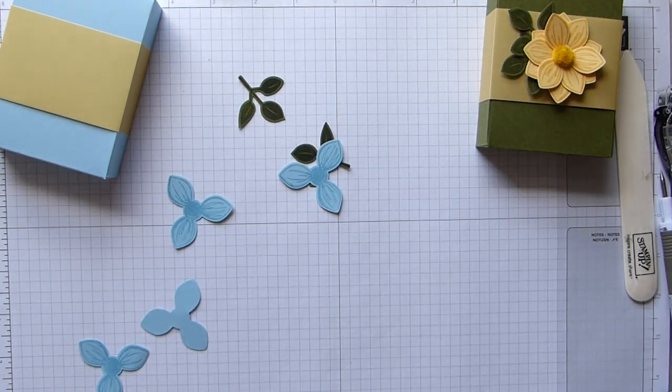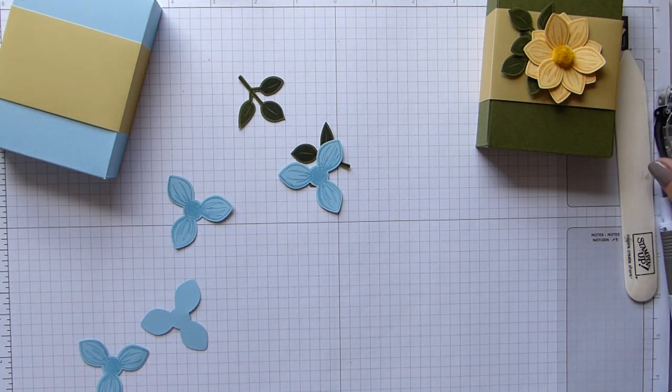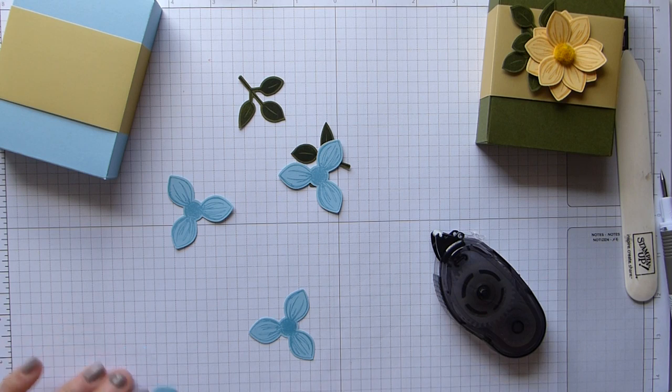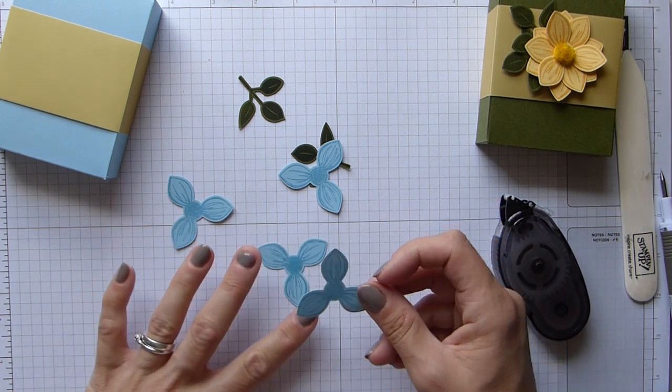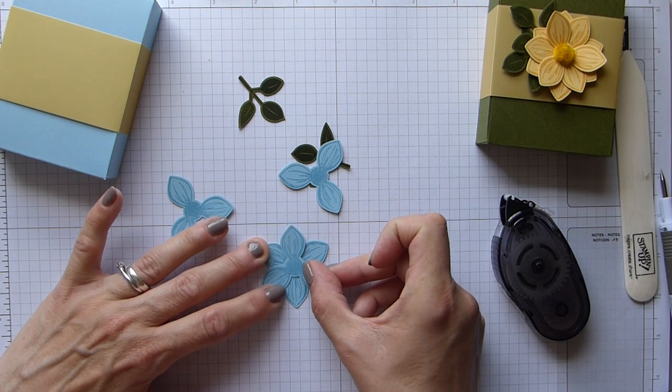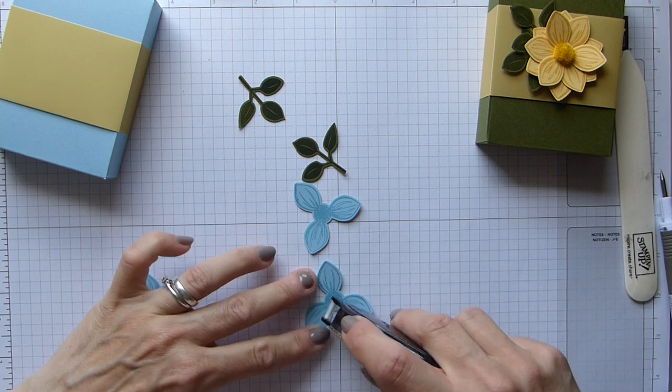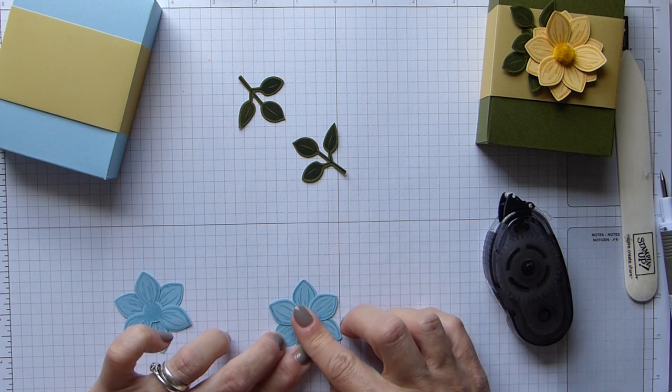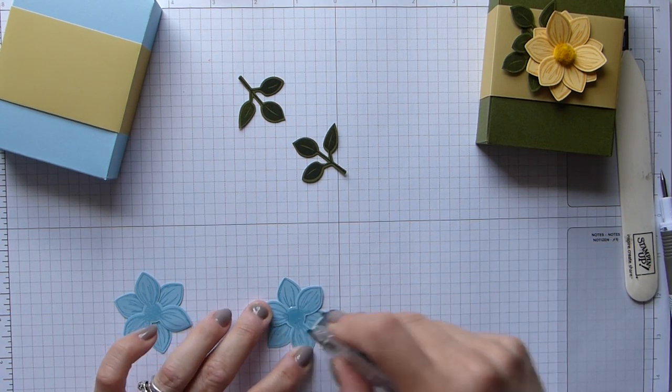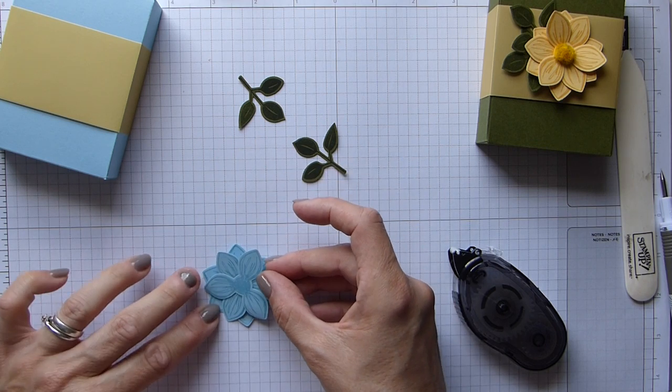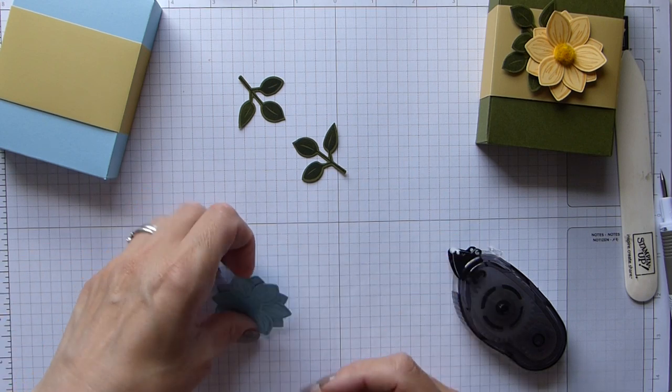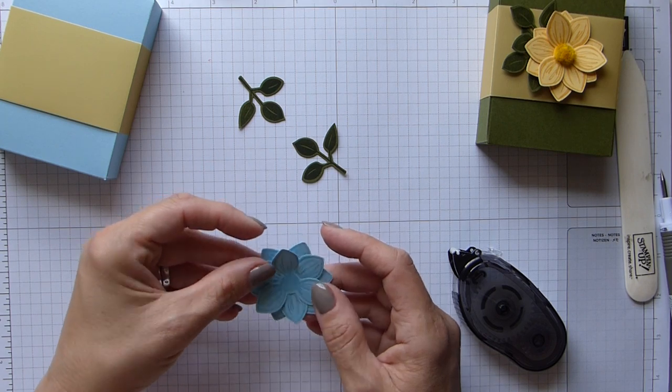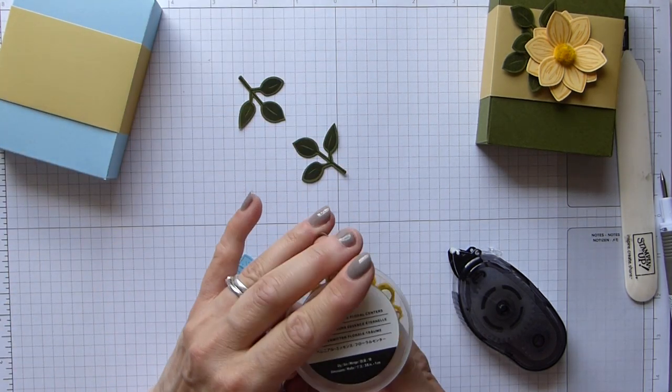They're just so pretty, these flowers. I think they're gorgeous. Back in with my snail - I've simply put some snail in the center of one flower, then layered my other one on top. I've done the same again with the other two pieces, then put these two together.